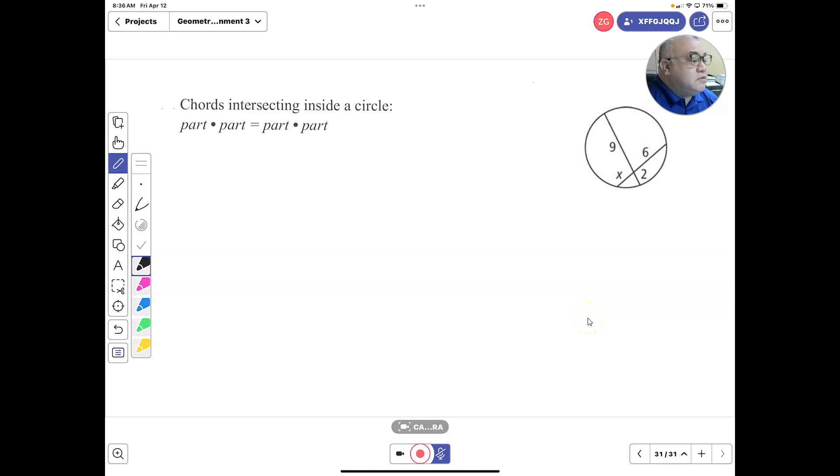We're going to figure out the measurement of segments when we have two chords that intersect. What I'd like for you to remember is this statement: we're going to get each piece of the segment, the measurement, and multiply. So you're going to see right now we have 6 times x.